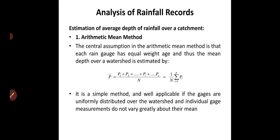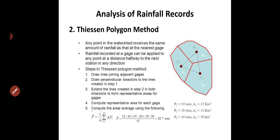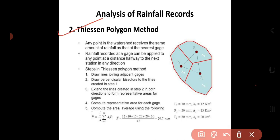Now we start with the analysis of rainfall records — how much will be the expected rainfall in a particular region. The first method is the arithmetic mean method: take the arithmetic mean of all rainfall stations. The second and very important method is the Thiessen's polygon method, where we locate points representing rain gauge stations and draw a polygon from those points.